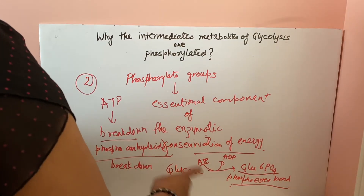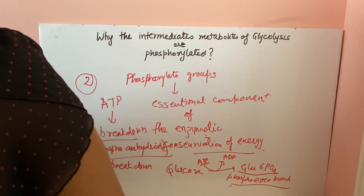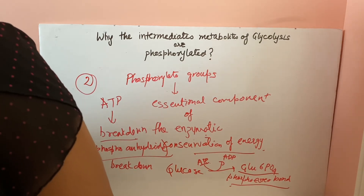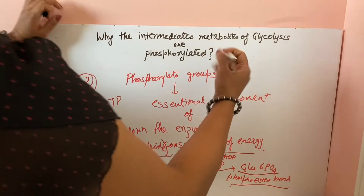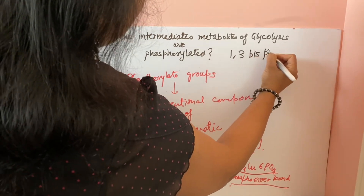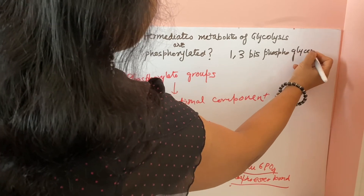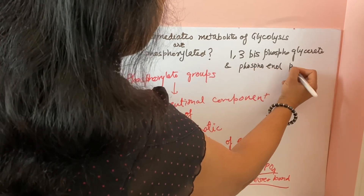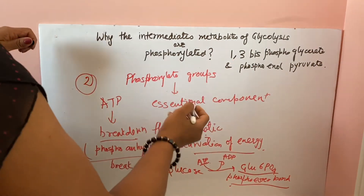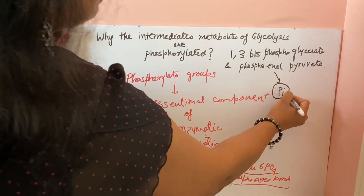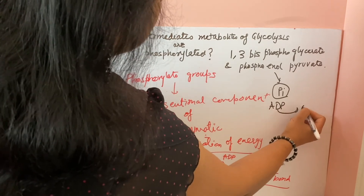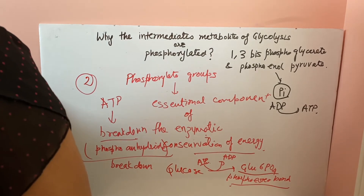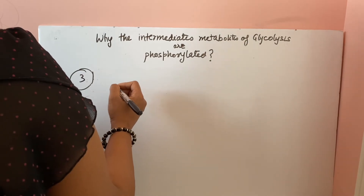The breakdown of the phosphoanhydride bond releases a lot of energy, and some of that energy is conserved in glucose-6-phosphate as a phosphoester bond. Phosphate groups are also important for energy conservation. High-energy compounds of glycolysis — 1,3-bisphosphoglycerate and phosphoenolpyruvate — donate their phosphate group to ADP to convert it into ATP.